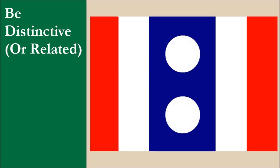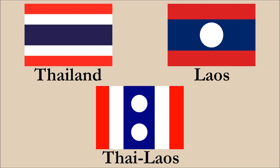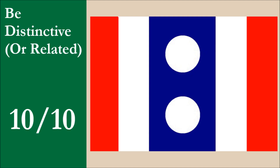The flag is distinctive among national flags. While it resembles the flags of Thailand and Laos, having vertical stripes makes it easy to tell apart from these two. And besides, if the two countries did unite, then the two current national flags would no longer be used. For this principle, the flag scores 10 out of 10.